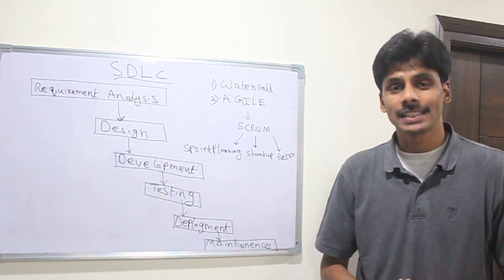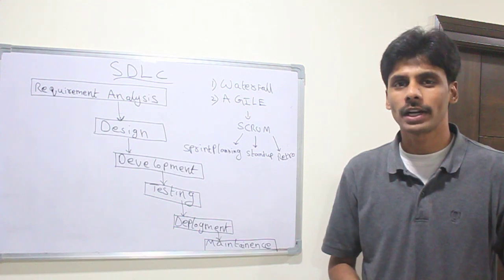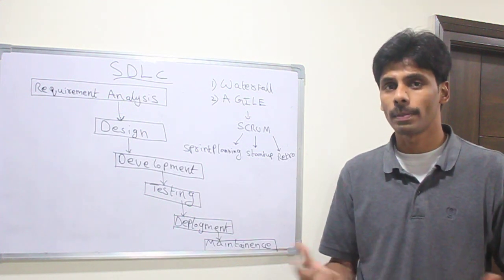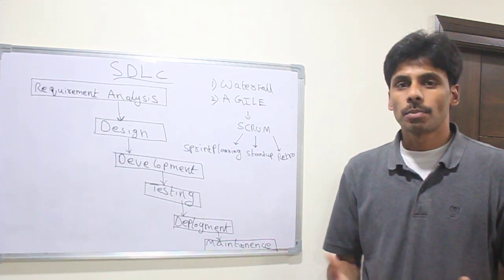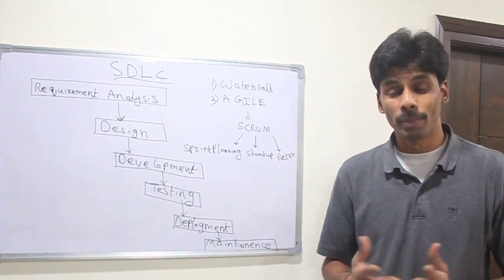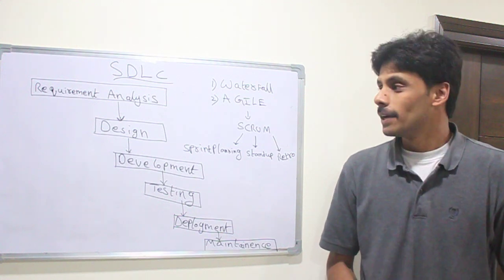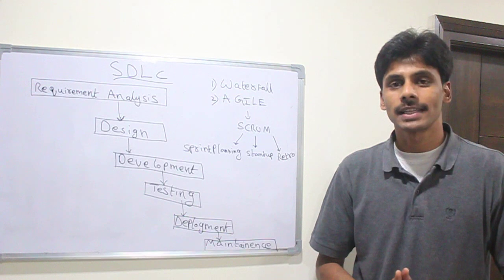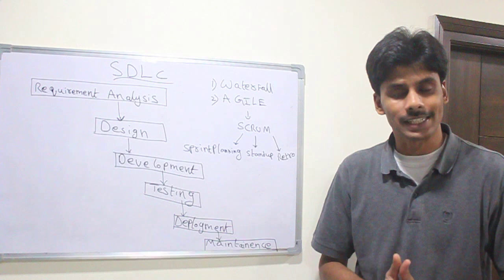The first stage is requirement analysis. This is where our business analyst or the TPO, the technical product owner, goes and talks to the client. If we are developing a particular software to sell to clients, or if it's a product, we sit with architects and developers and brainstorm ideas. The key role here is played by the business analyst. Once the business analyst gathers the requirements, she comes back and explains them to the development team as well as the testers.